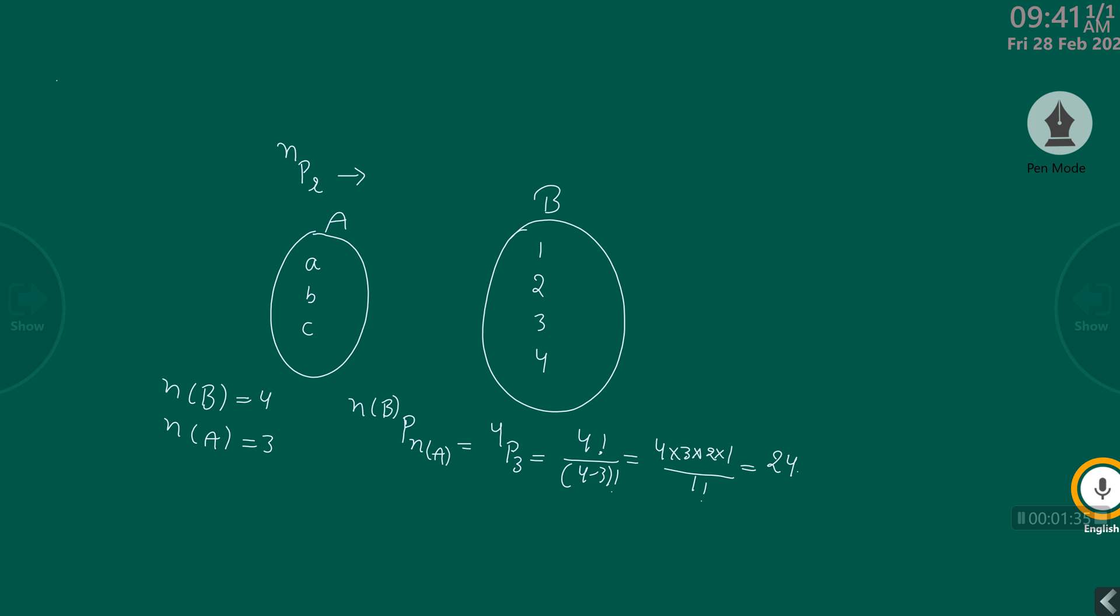How is it possible? Suppose for A you have 4 choices. A can map to 1, 2, 3, or 4. It means for A you have 4 choices. And it is a one-to-one function, so A must be connected to any one of the numbers 1, 2, 3, or 4. Suppose A connects to 1.